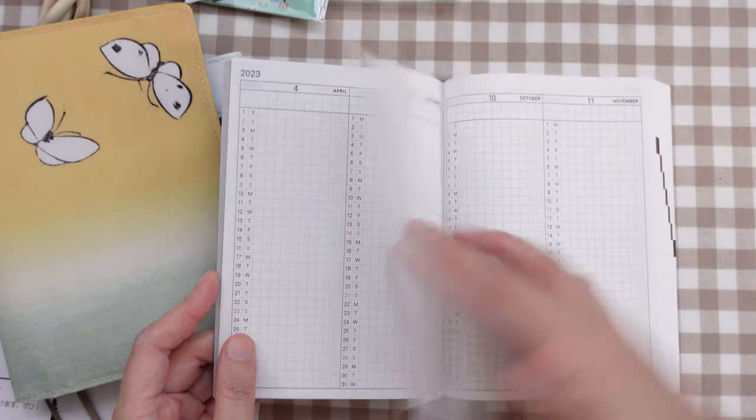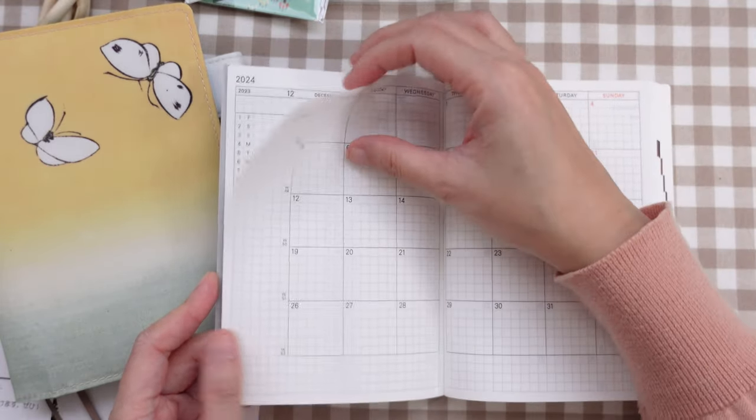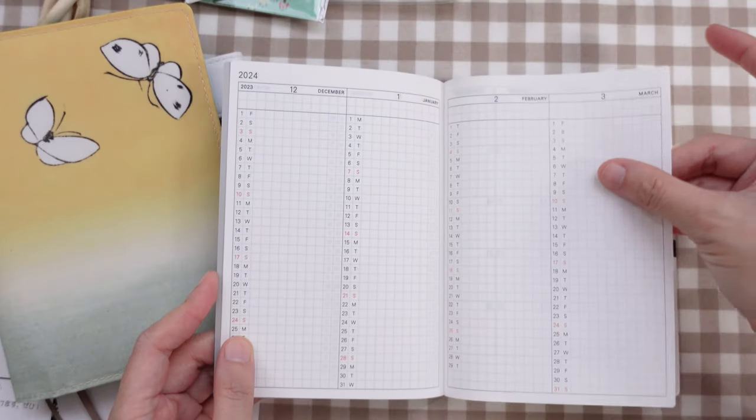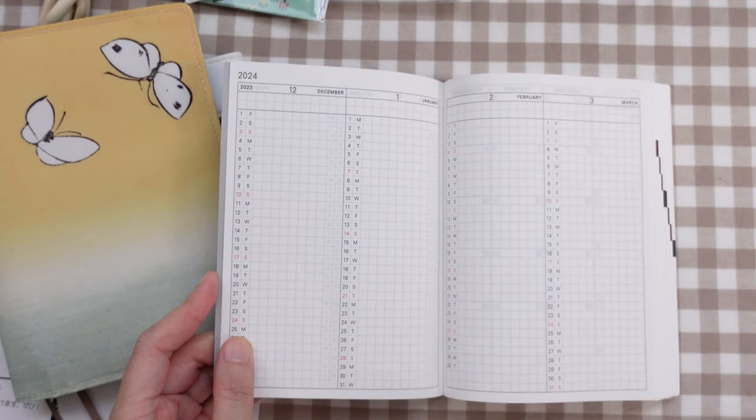Here we have some monthly logs that start in December, which I'm really excited about because I can make some plans over here, and I don't have to wait until January to do that. And this one goes all the way to March of 2024, which is really good.